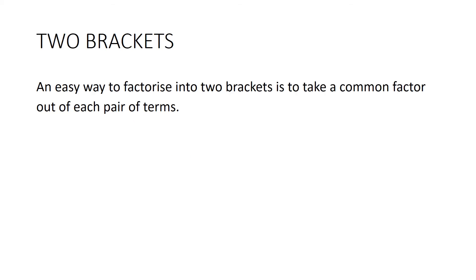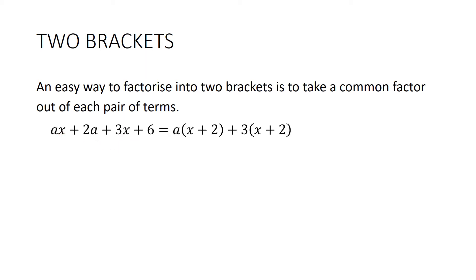An easy way to factorise into two brackets is to take a common factor out of each pair of terms. For something like ax + 2a + 3x + 6: a is a common factor of the first two terms, and 3 is a common factor of the second two. Once we have that, x + 2 is a common factor of each term, so it comes out the front, outside of (a + 3). We've gone from four terms into two brackets.